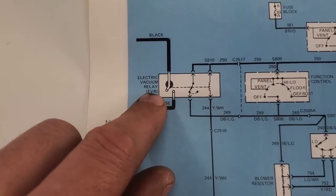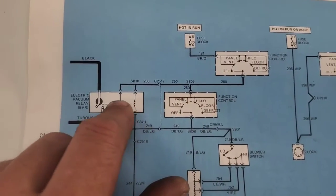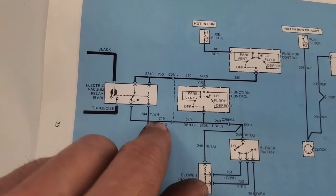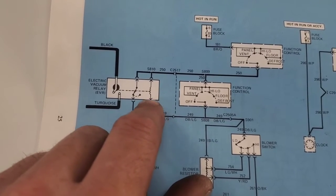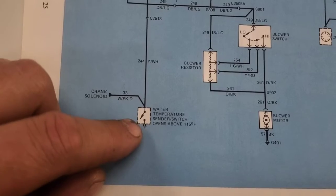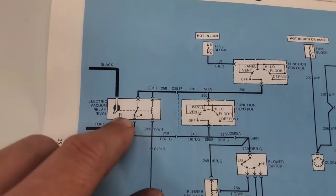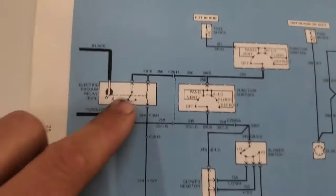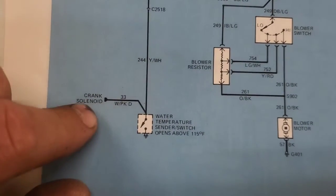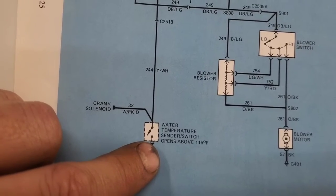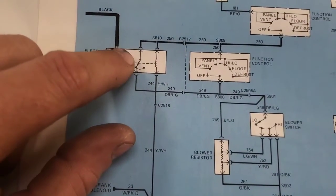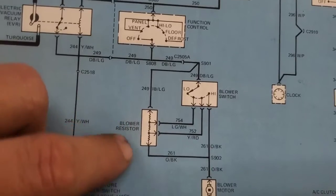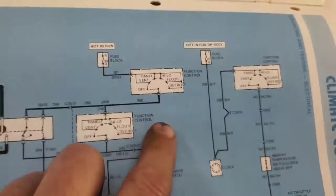Let's have a look at the electrical schematic. This here is our EVR — Electric Vacuum Relay. We've got two orange wires on one side, then a dark blue with a light green tracer, and a yellow with a white tracer wire. We've got a water temperature switch here, and you can see this is a normally closed switch because it opens at 115 degrees. When it's open there's no ground, so this switch is allowing power to get through to your blower switch and resistor, and down to your blower motor.